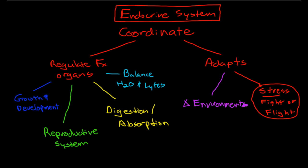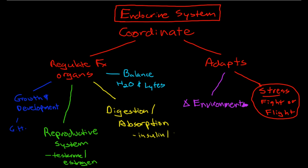The body does all this by sending out hormones from endocrine glands to send messages to various tissues to change cellular processes. Growth and development is controlled by growth hormone. The reproductive system is controlled by testosterone and estrogen. Digestion and absorption is controlled by insulin, glucagon, and a few other hormones of the gut like ghrelin.